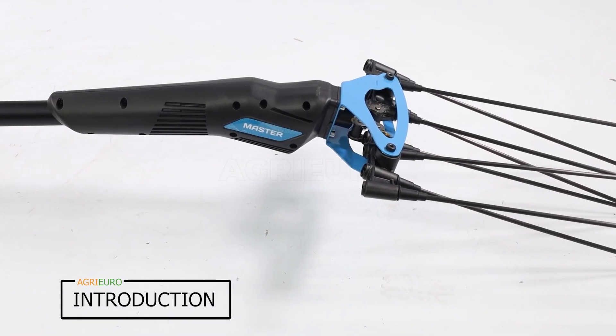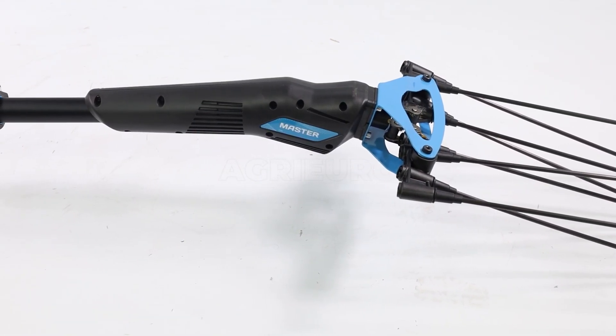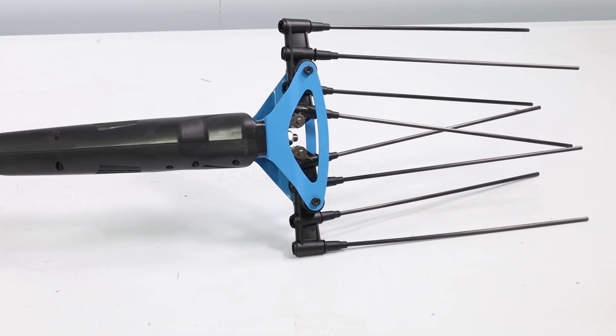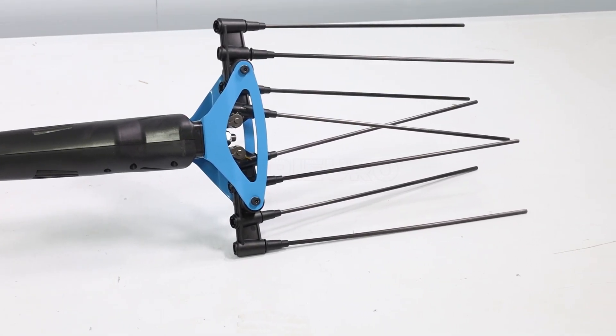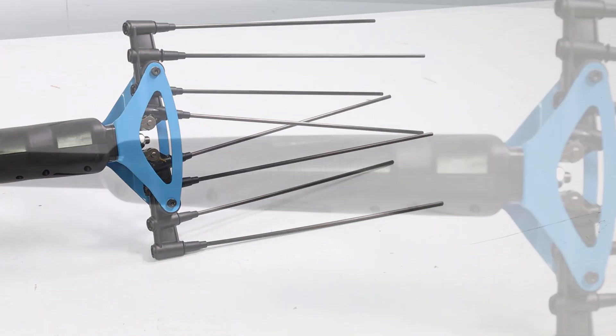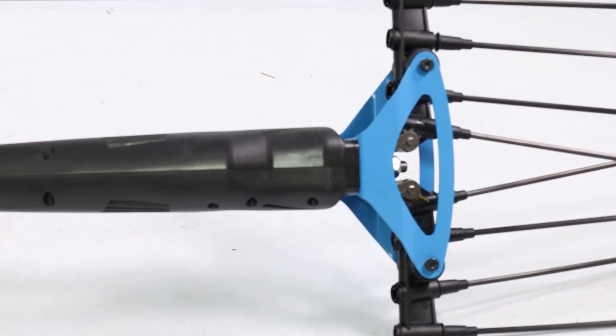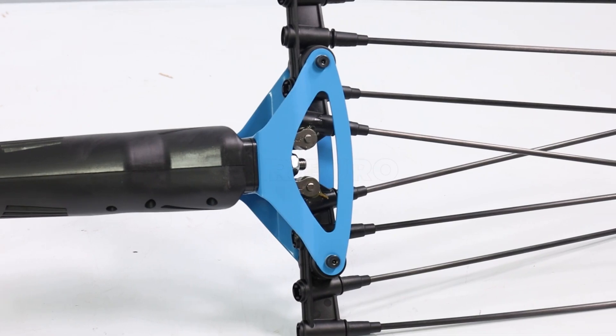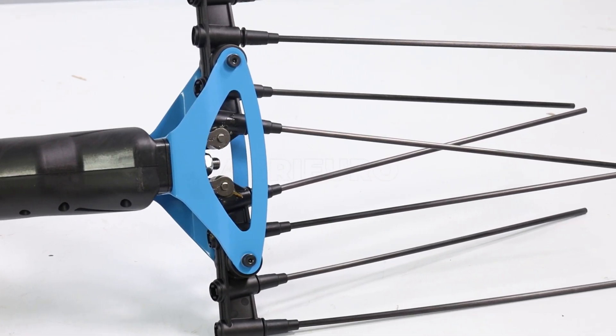The Campagnola Master Olive Harvester represents an Italian product of excellent quality, meticulously designed to ensure extraordinary results in olive harvesting. Its design focuses on preserving the health of plants and fruits, ensuring optimal harvesting without damage.